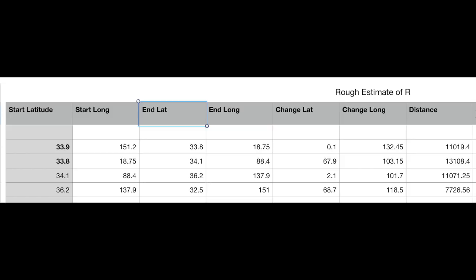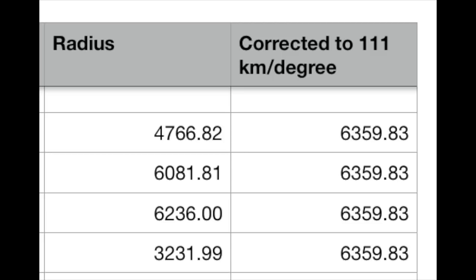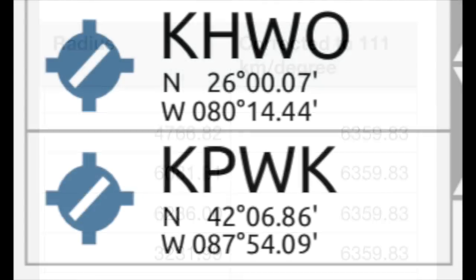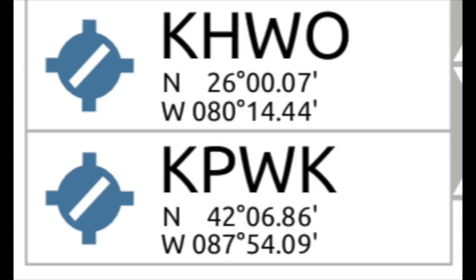Repeating this process for all four trips, the corrected radius — normalized to 111 kilometers per degree — gives us a radius of 6,359.83 kilometers. Now let's test it on an unknown: a trip from Miami, Florida to Chicago, Illinois. Using starting and ending coordinates, we calculate the transverse distance in degrees, apply the arc-of-a-circle formula with our radius, and get an estimate of 1,976 kilometers. The actual flight distance is 1,916 kilometers — a difference of only 3%.